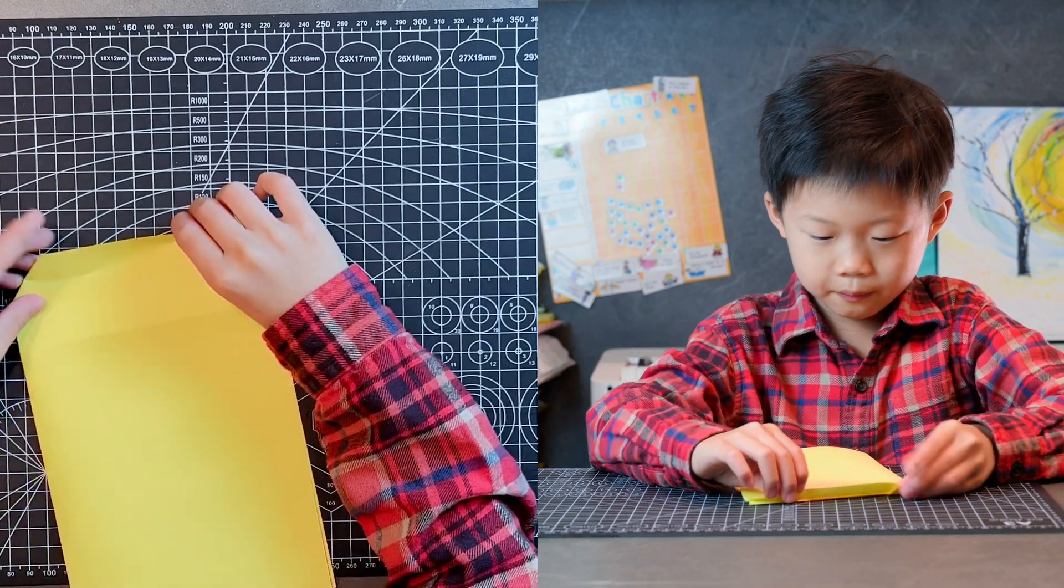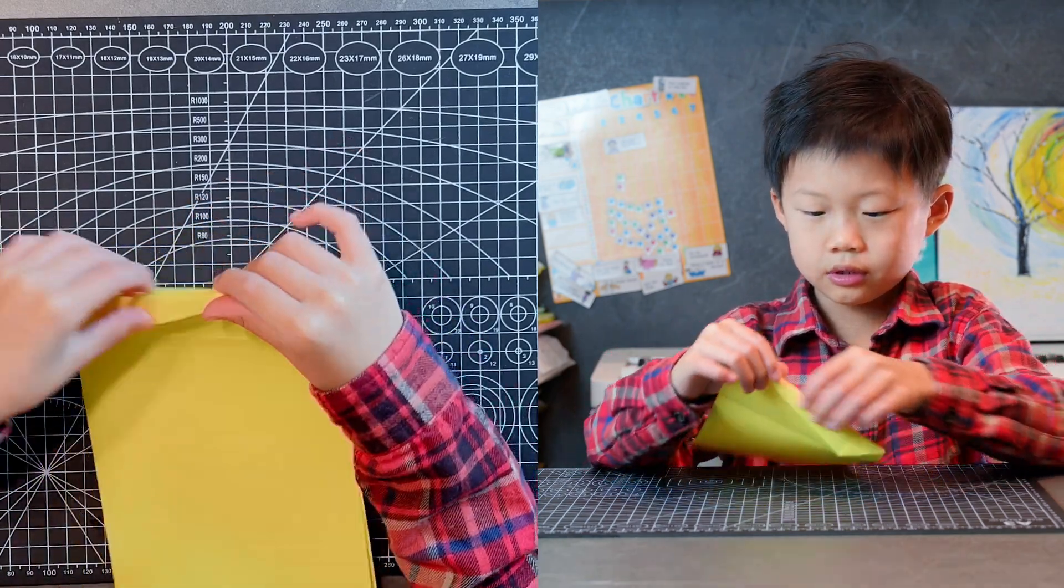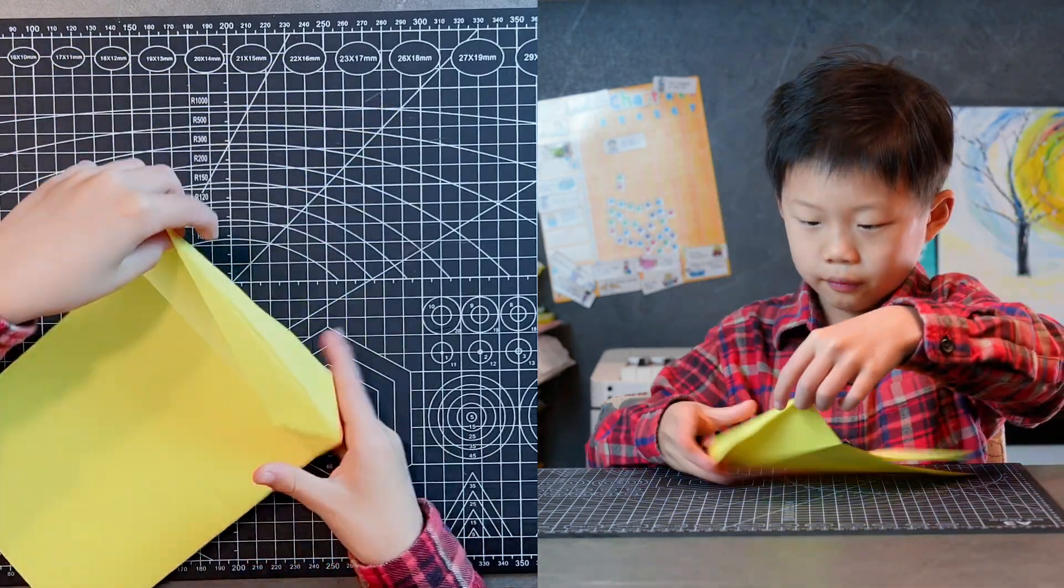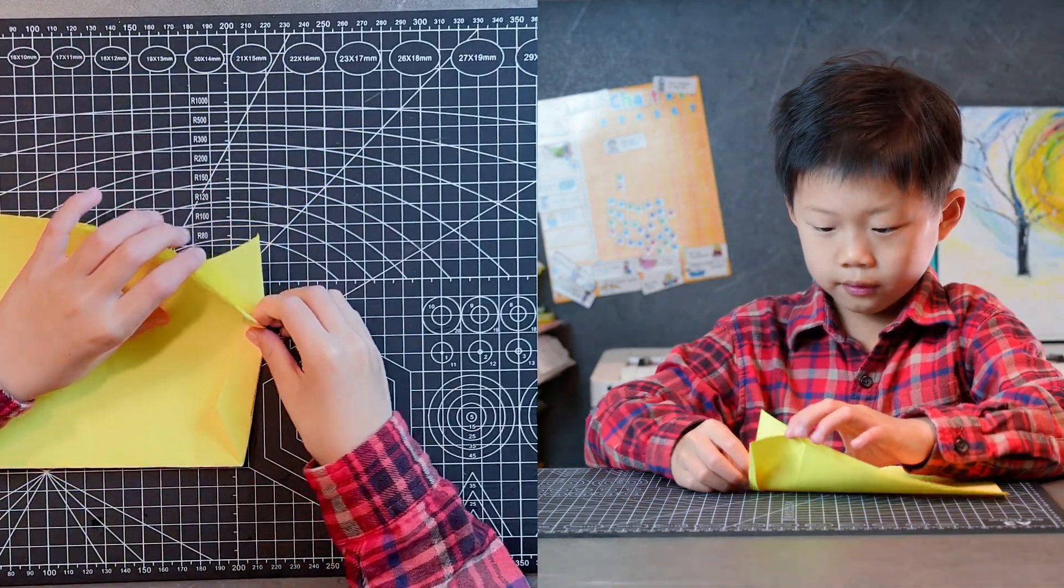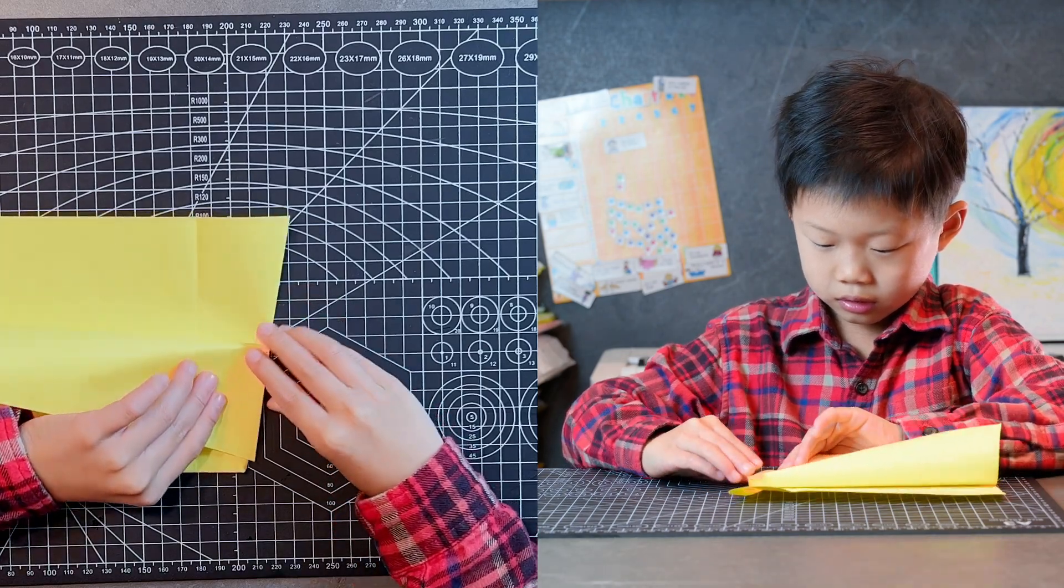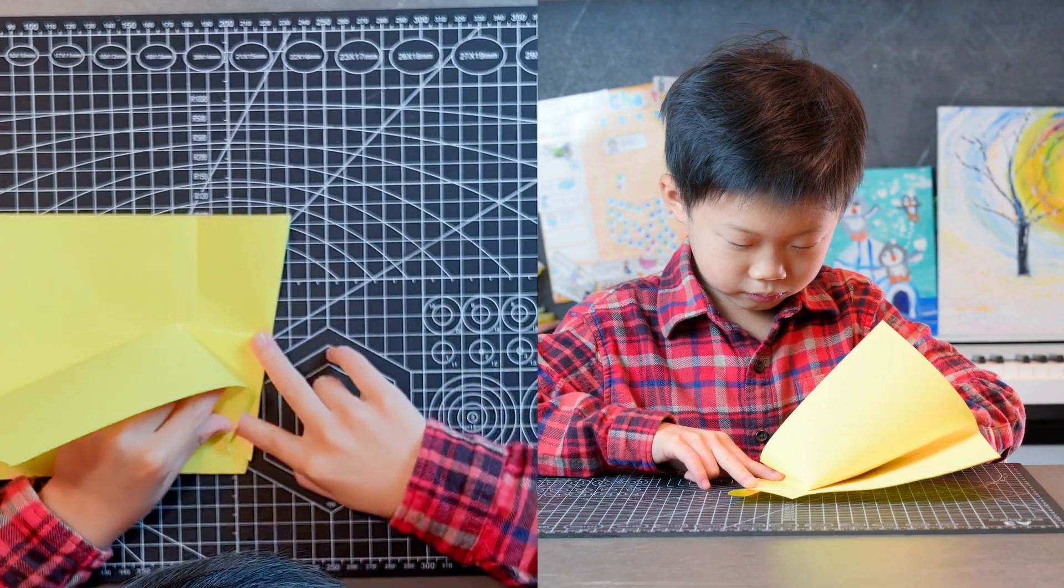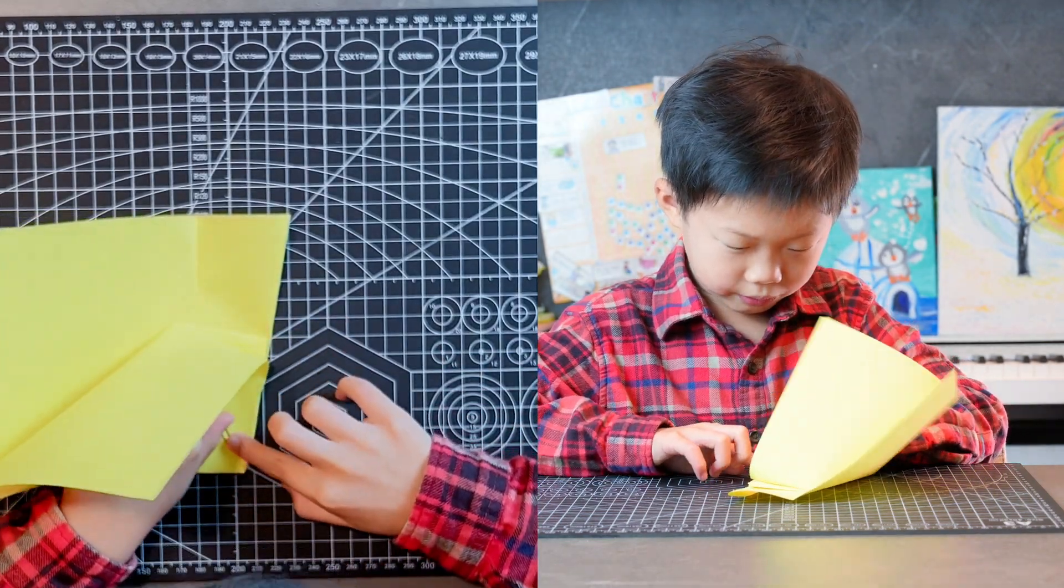And flip it over, reverse those creases which means just flip that point over and flip it back over. Fold it over and fold it like this. But it needs to be more down, like about that far.